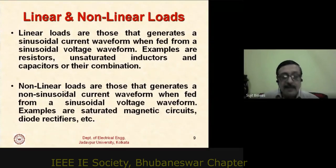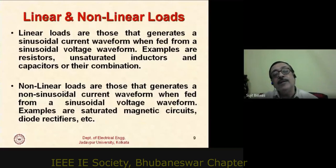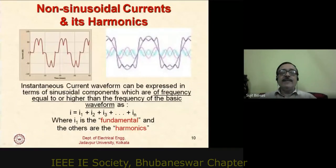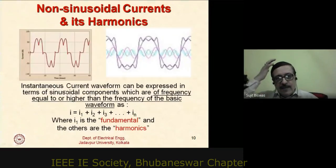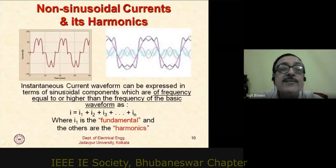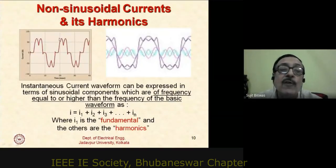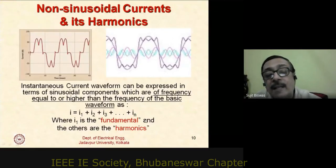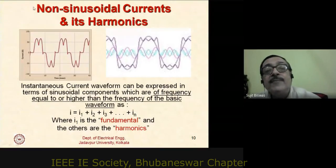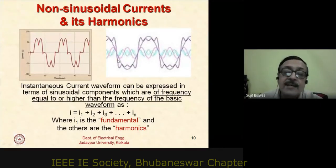A non-sinusoidal current can always be split into its harmonics using Fourier series. The oscillogram of a non-sinusoidal waveform can be decomposed into components — each component is a sine wave at a different frequency. The lowest frequency is the fundamental and the others are the harmonics. This allows us to split the non-sinusoidal current waveform into the fundamental and its harmonics, which gives us certain analytical advantages.